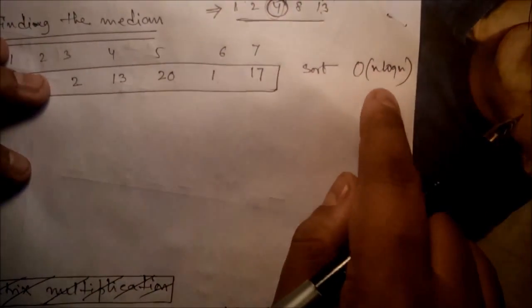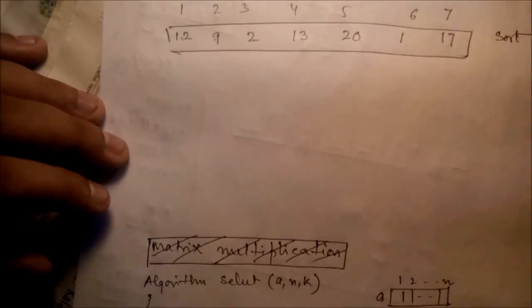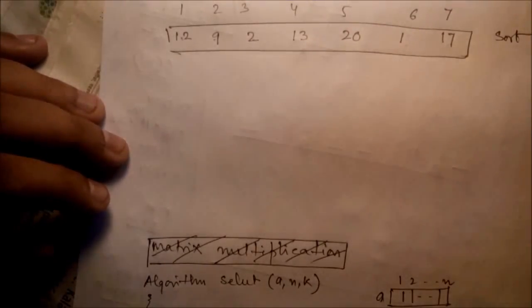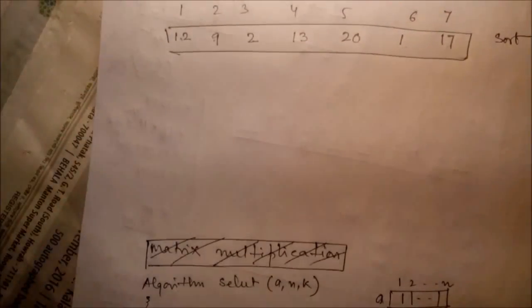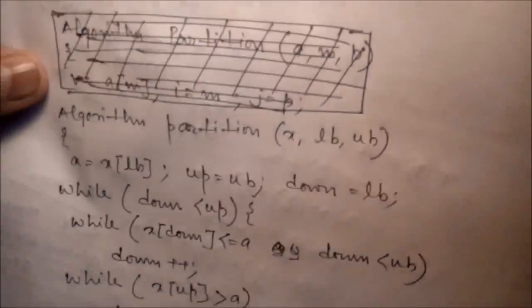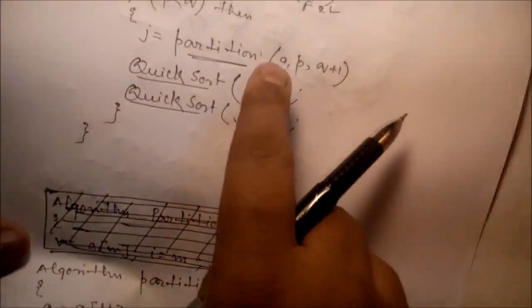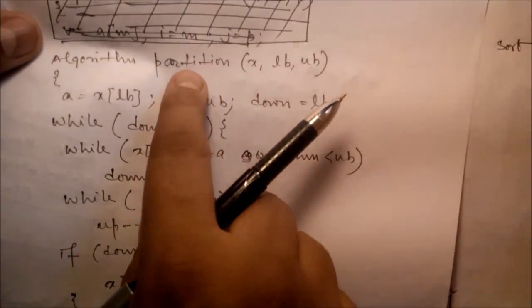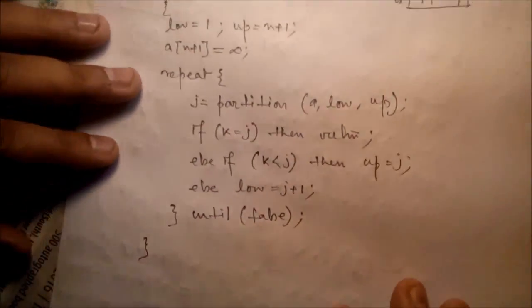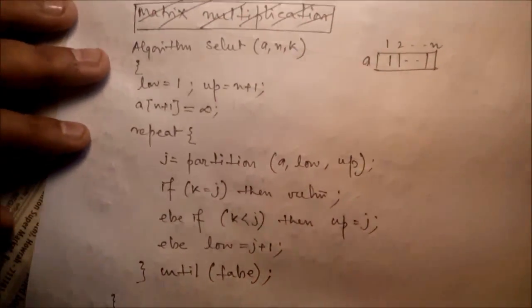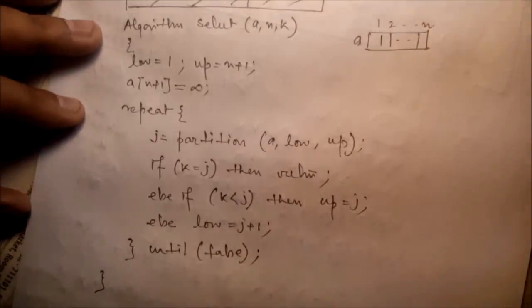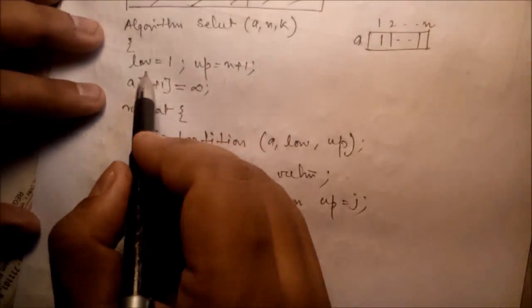The question is: can we reduce this complexity? Yes — using the quickselect approach. In the quicksort algorithm there is a partition step, and we can use that partition part to calculate the median value more efficiently.